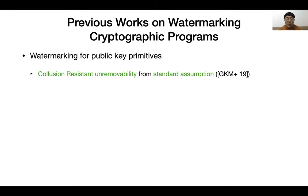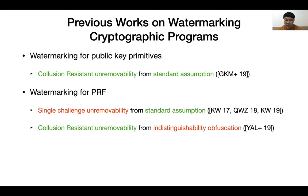Towards constructing collusion-resistant watermarking schemes for cryptographic programs, we already know how to construct collusion-resistant watermarking schemes for public key primitives from simple assumptions, such as the existence of one-way functions and the standard lattice assumptions. But for watermarking schemes for pseudorandom functions, existing constructions from standard assumptions can only achieve a weaker single-key unremovability, and the only known collusion-resistant watermarking schemes for pseudorandom functions are constructed from indistinguishability obfuscation.